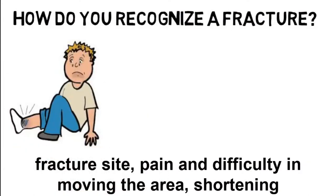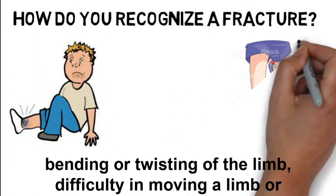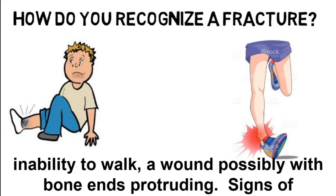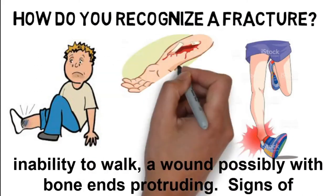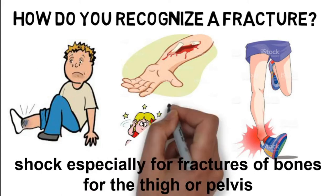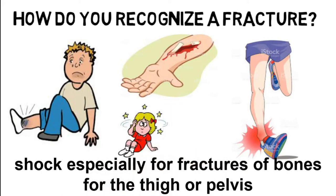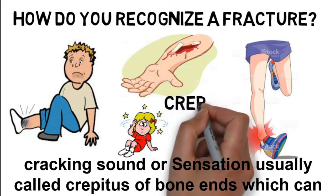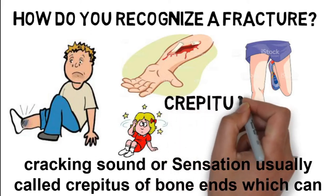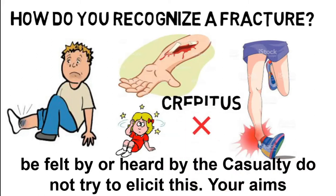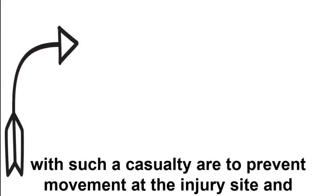How do you recognize a fracture? There is usually deformity, swelling, and bruising at the fracture site; pain and difficulty moving the area; shortening, bending, or twisting of the limb; a wound possibly with bone ends protruding; signs of shock especially for fractures of the thigh or pelvis; and a cracking sound or sensation called crepitus. Do not try to elicit this.